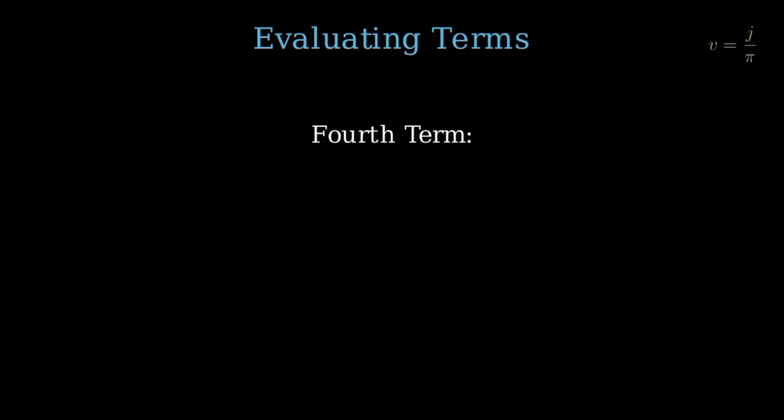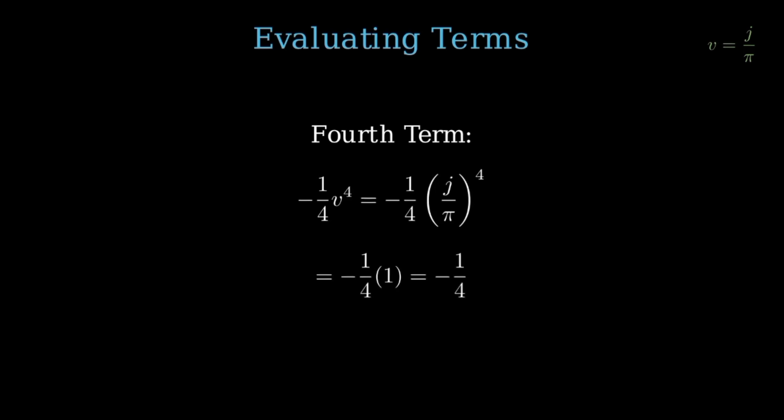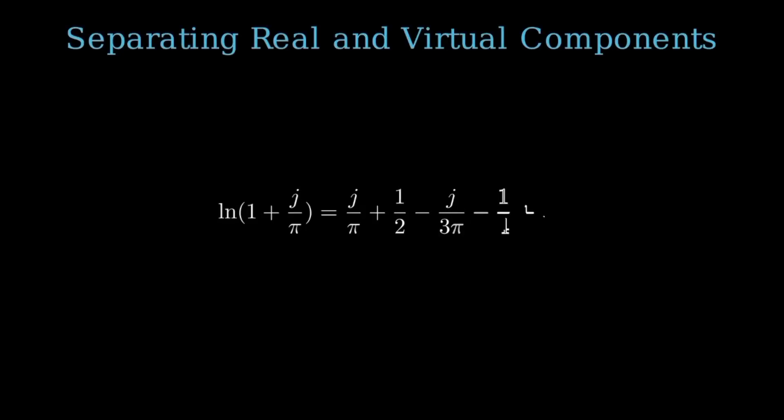The fourth term is negative one-fourth times v to the fourth. Substituting v, this becomes negative one-fourth times (j over pi) to the fourth. Since j to the fourth equals pi to the fourth, (j over pi) to the fourth equals pi to the fourth divided by pi to the fourth, which equals 1. Then negative one-fourth times 1 equals negative one-fourth. So the fourth term simplifies to negative one-fourth. Now that we've expanded our series, let's separate it into real and virtual components. The natural logarithm of 1 plus v equals j over pi plus one-half minus j over 3pi minus one-fourth, and so on.